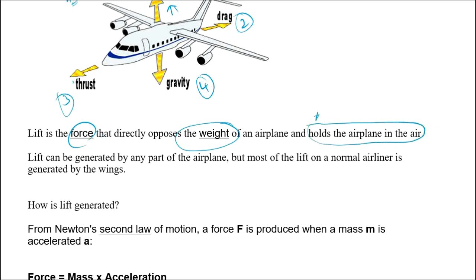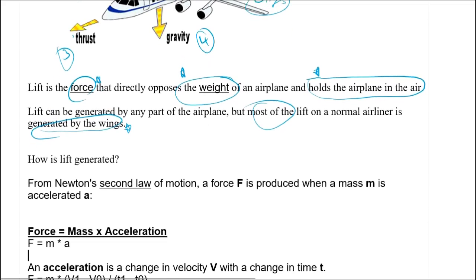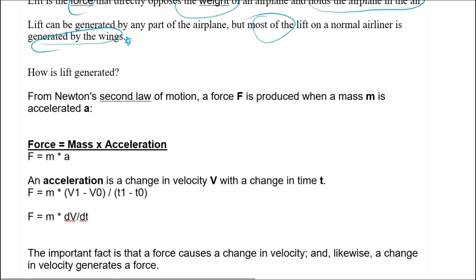These are the key points to remember. Since lift is acting upwards on the aircraft, lift can act upon any part of the aircraft. However, lift is predominantly generated by the wings of the aircraft. This is a key term — most of the lift is generated by the wings.